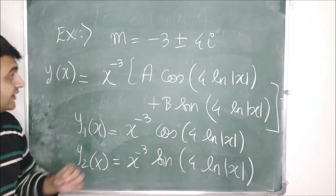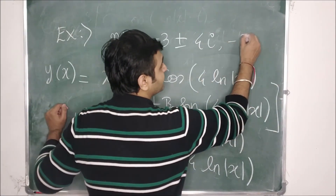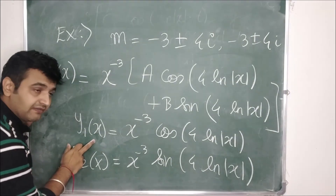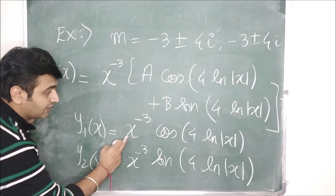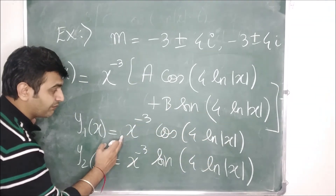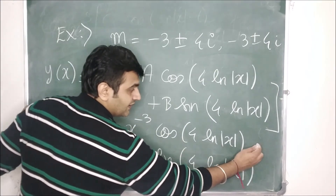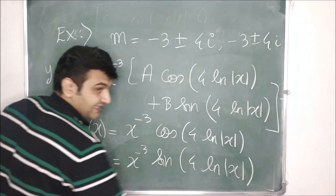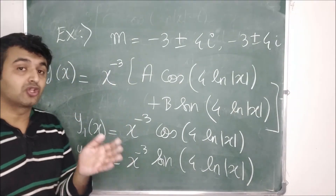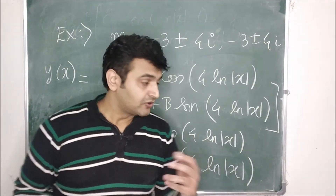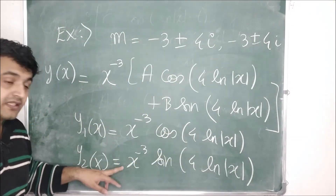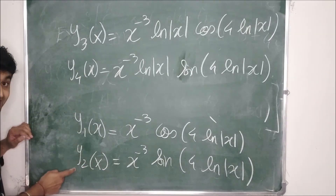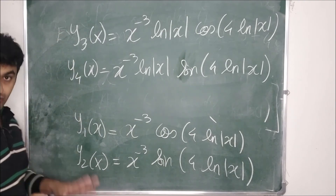If complex roots −3 ± 4i are repeated twice, we multiply by ln(x) to get additional solutions. So y₃ = x^(−3)cos(4 ln x)·ln(x) and y₄ = x^(−3)sin(4 ln x)·ln(x). The general solution is then c₁y₁ + c₂y₂ + c₃y₃ + c₄y₄ — the same pattern as for constant coefficients, but multiplying by ln(x) instead of x.